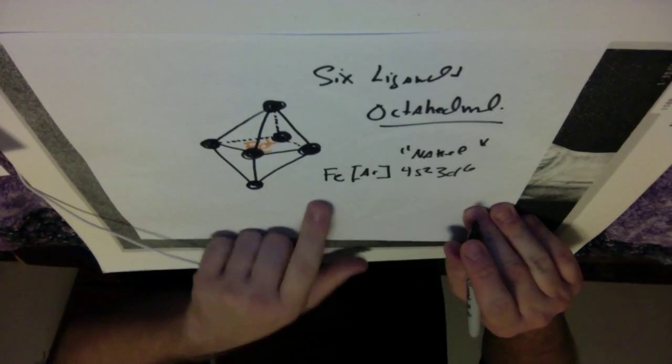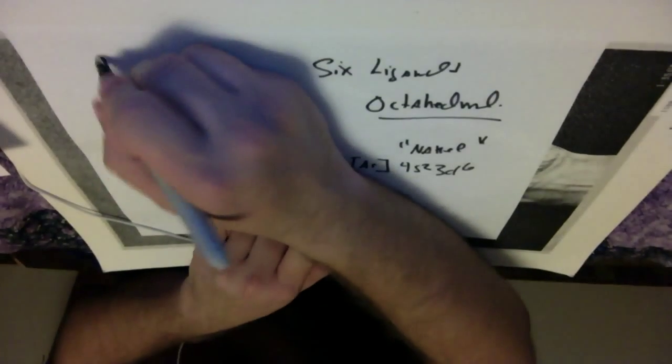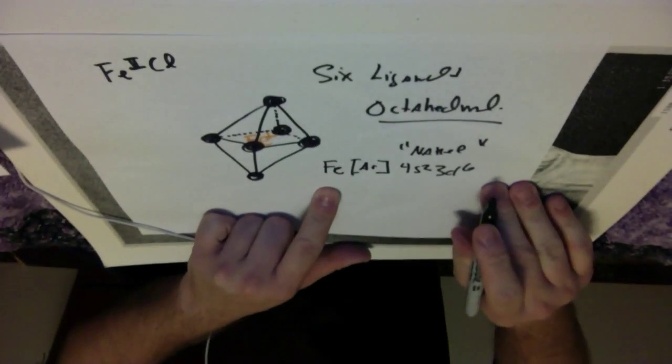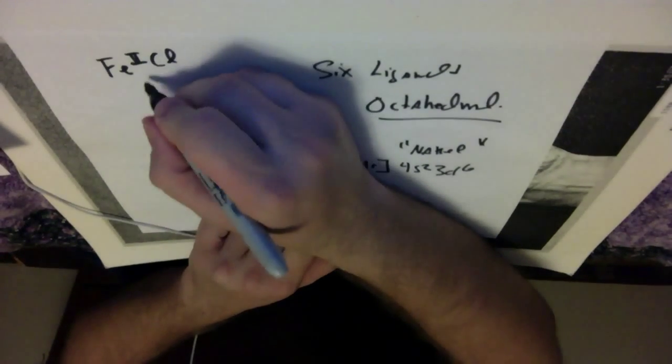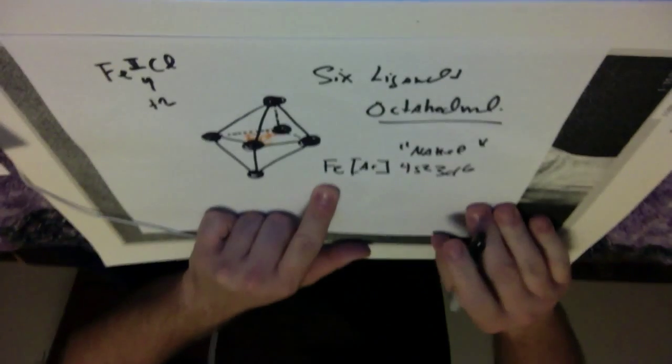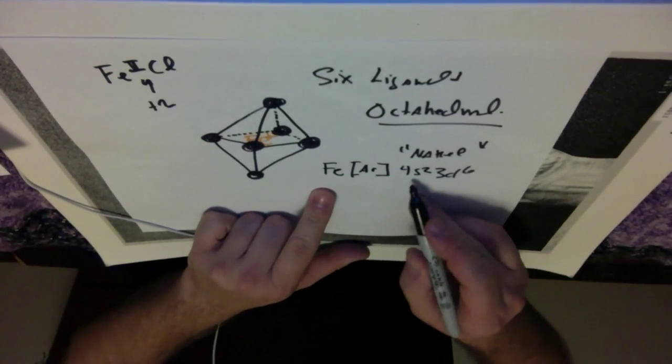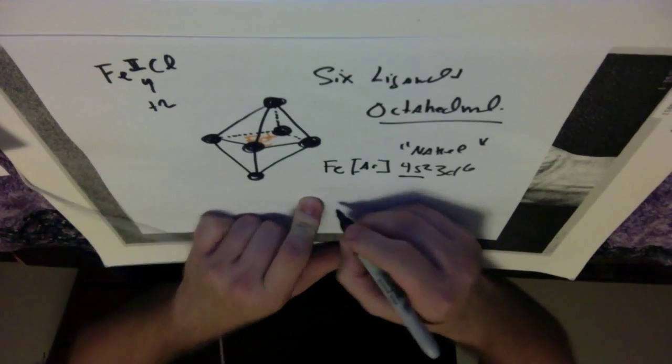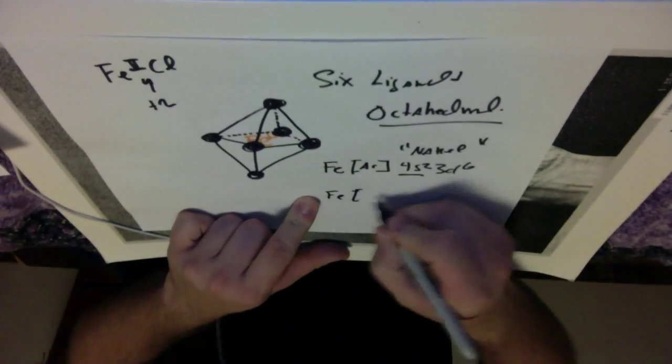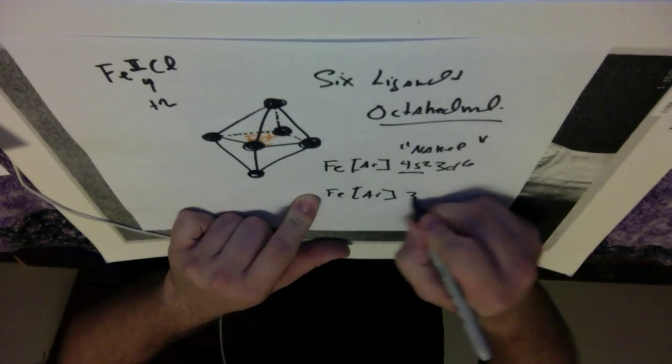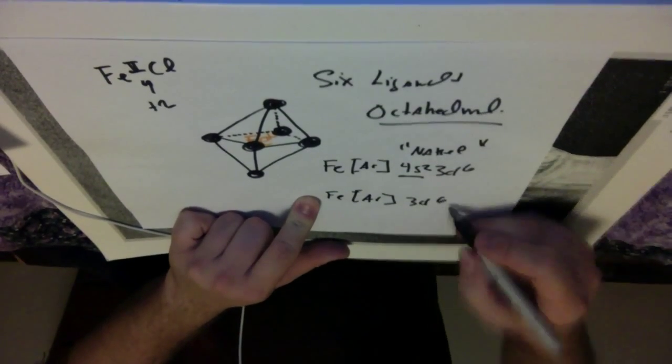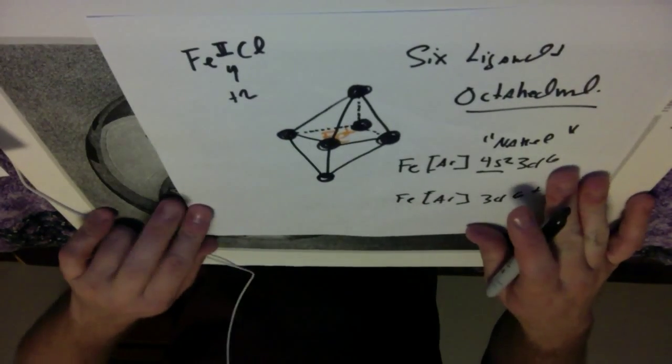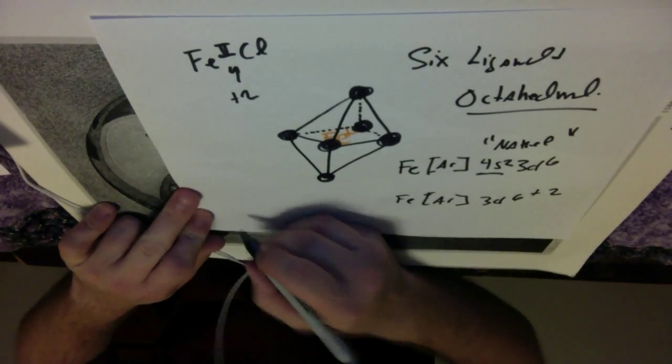So then what we're going to do is we're going to ionize it, and this was iron 2 chloride. So we want this is a plus 2, that's our oxidation state. So I'm going to ionize it, take away the s electrons. I'm going to have iron, argon, 3d6. So this is the plus 2.